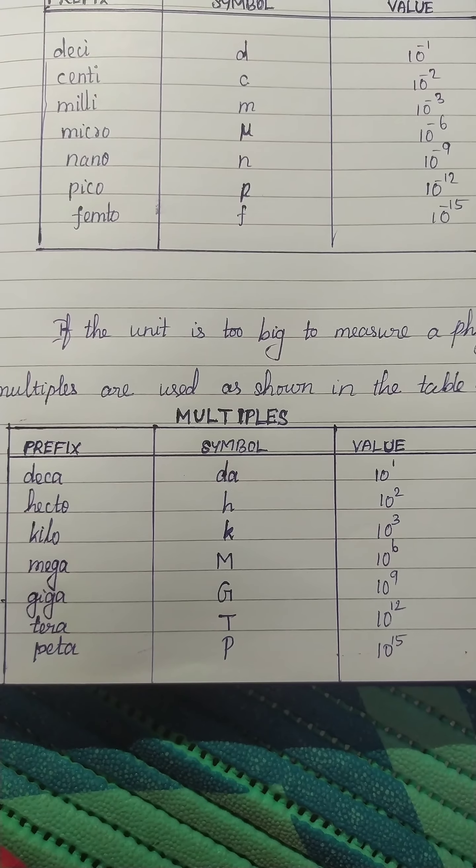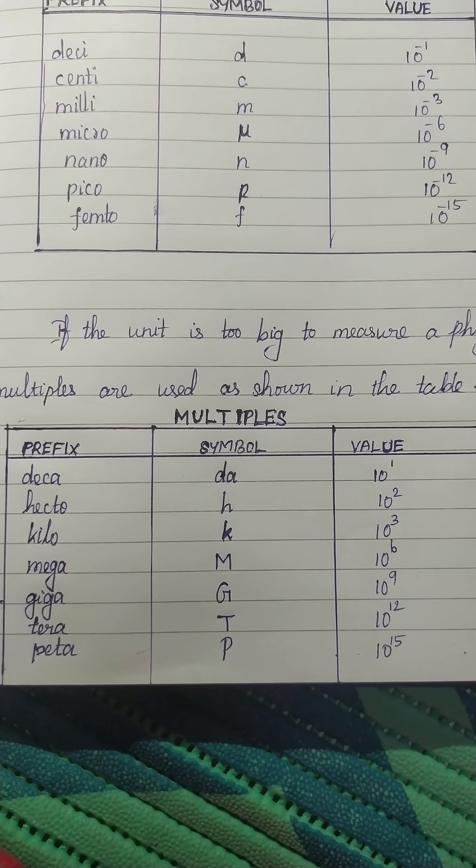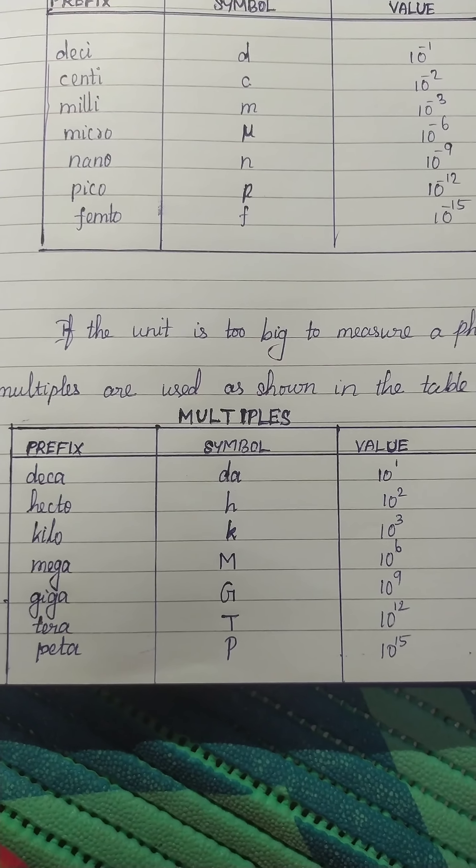Deca (DA) 10 power 1, Hecto (H) 10 power 2, Kilo (K) 10 power 3, Mega (M) 10 power 6, Giga (G) 10 power 9, Tera (T) 10 power 12, Peta (P) 10 power 15.